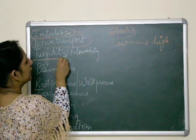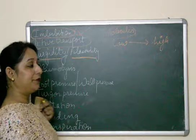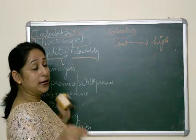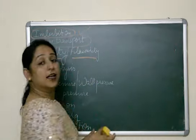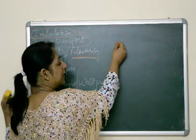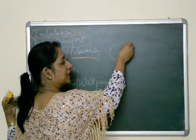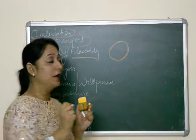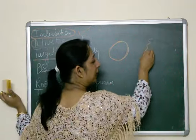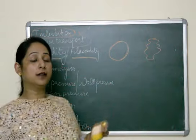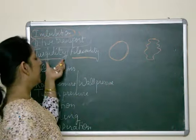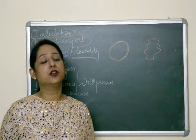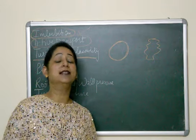Next is turgidity and flaccidity. Turgidity means stiffness. A cell is turgid when the cell is filled up with water — it becomes turgid, it becomes stiff. Flaccidity means the cell is not stiff. What is turgidity? The swelling of the cell by absorption of water is known as turgidity. Flaccidity — the shrinkage of the cell by losing water is known as flaccidity.